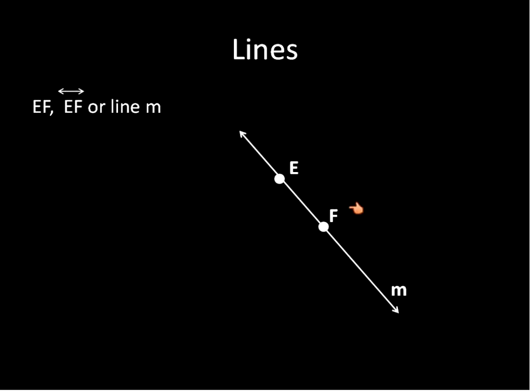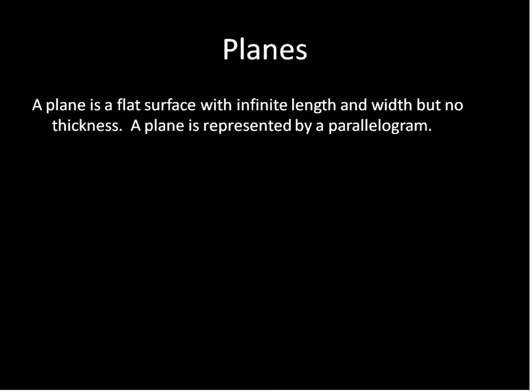Here's an example. So we could call this line E, F. We could also call it line F, E. We could label it with the line symbol above it. Or because there's a lower case M next to the line, we could just call it line M. And any of those classifications would be appropriate for this line.